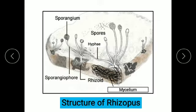The basic structure of bread mold is made up of thread-like structures called hyphae. Hyphae form a branching network called mycelium. Rhizopus reproduces by growing vertical hyphae called sporangiophores. Each hyphae swells at the tip to form a sporangium.